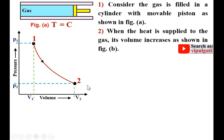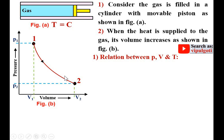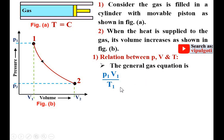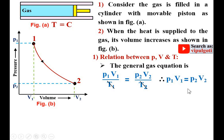Keep in mind that the isothermal process is always a curve on the PV diagram. Now, the first point: the relation between pressure, volume, and temperature during the isothermal process. As we know, the general characteristic gas equation is PV/T = constant, so P1V1/T1 = P2V2/T2. Since temperature is constant, T1 = T2, and they cancel from both sides, giving the important relation: P1V1 = P2V2.